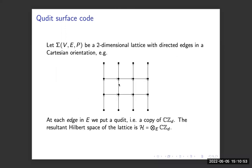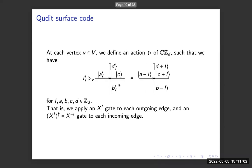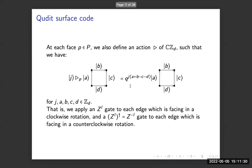For completeness, V is the set of vertices, E is the set of edges, and P is the set of faces — P stands for plaquette, but I'm going to say faces because it's shorter. At each vertex in the set of vertices we define an action of the group algebra, which applies an X gate or an X^l gate to each outgoing edge and the inverse to the incoming edges.